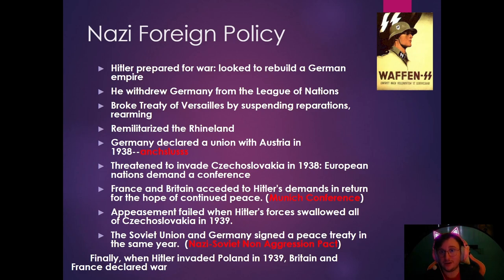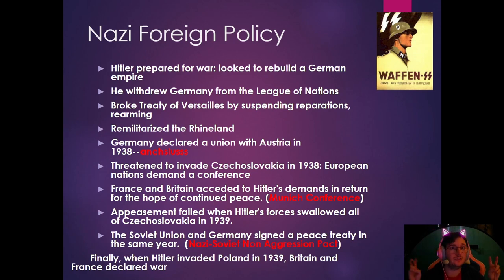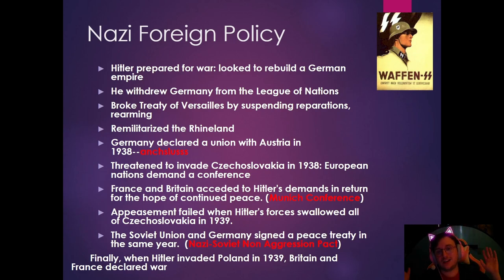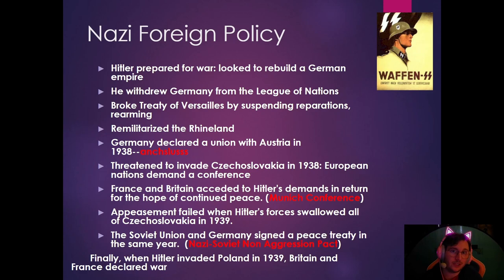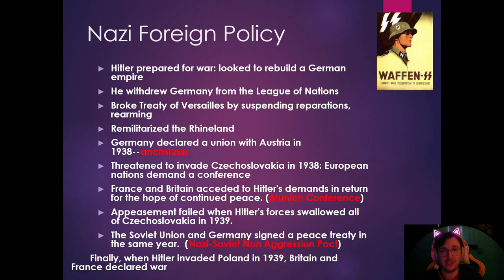Hitler prepared for war and looked to build a new German empire — the Third Reich. He withdrew Germany from the League of Nations, broke the Treaty of Versailles by suspending reparations, and began to rearm his military with new tanks, guns, and planes.